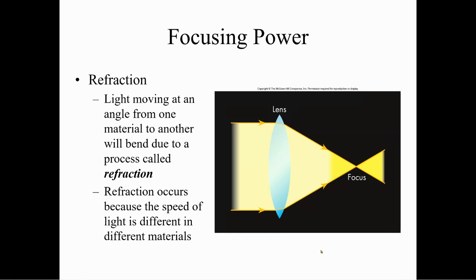Focusing power — refraction. When light travels through a different medium, we learned this in the last chapter, it changes speed. So light moving at an angle from one material to another will bend due to a process called refraction. Refraction occurs because the speed of light is different in different materials.